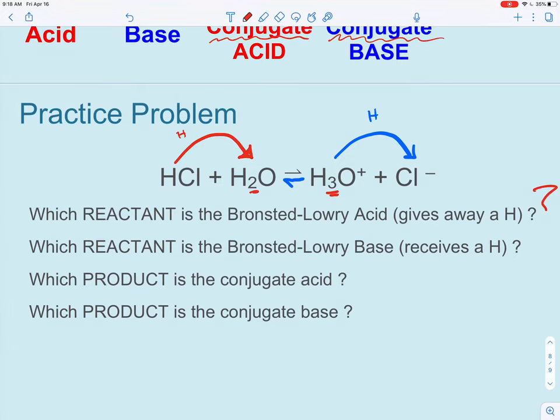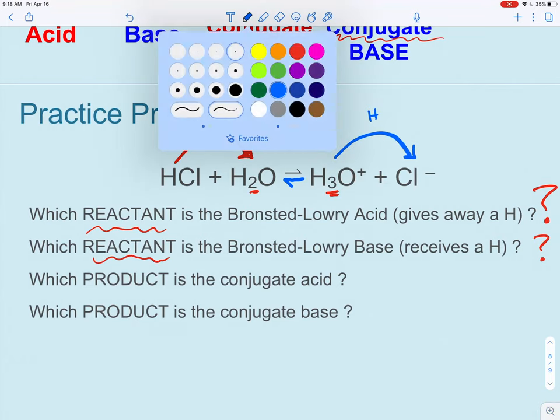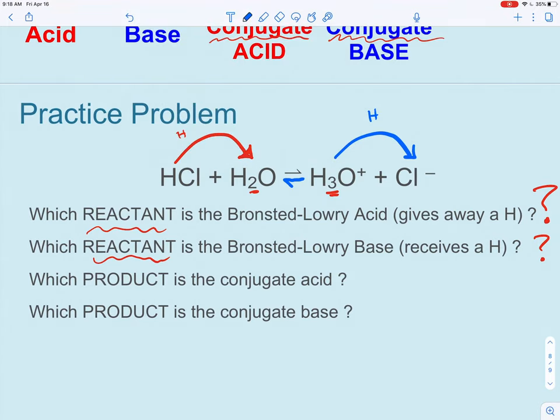So knowing that information, I want you to answer these questions. Which one's going to be the Bronsted-Lowry acid? Again, you should look at the reactants. That's on the left side. Which one is the Bronsted-Lowry base? Which chemical is the conjugate acid? So this one, you want to look on the left side, the products. And which chemical is the conjugate base? All right, hopefully you were able to figure those out. We'll continue to review.